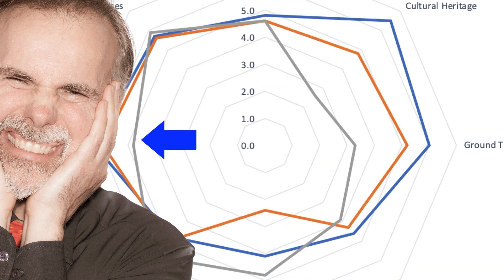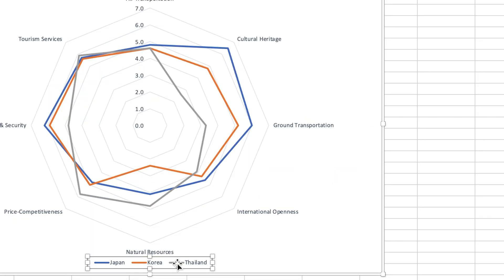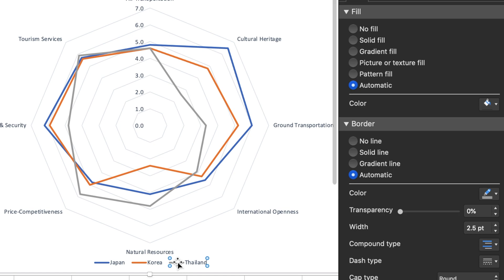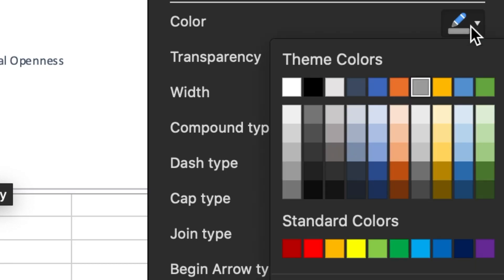I'm also not too sure about the color of this line. Gray is a little difficult to discern compared to the other colors. Double-clicking on this line in the legend opens up the formatting panel and I think that green is a bit more representative of Thailand.